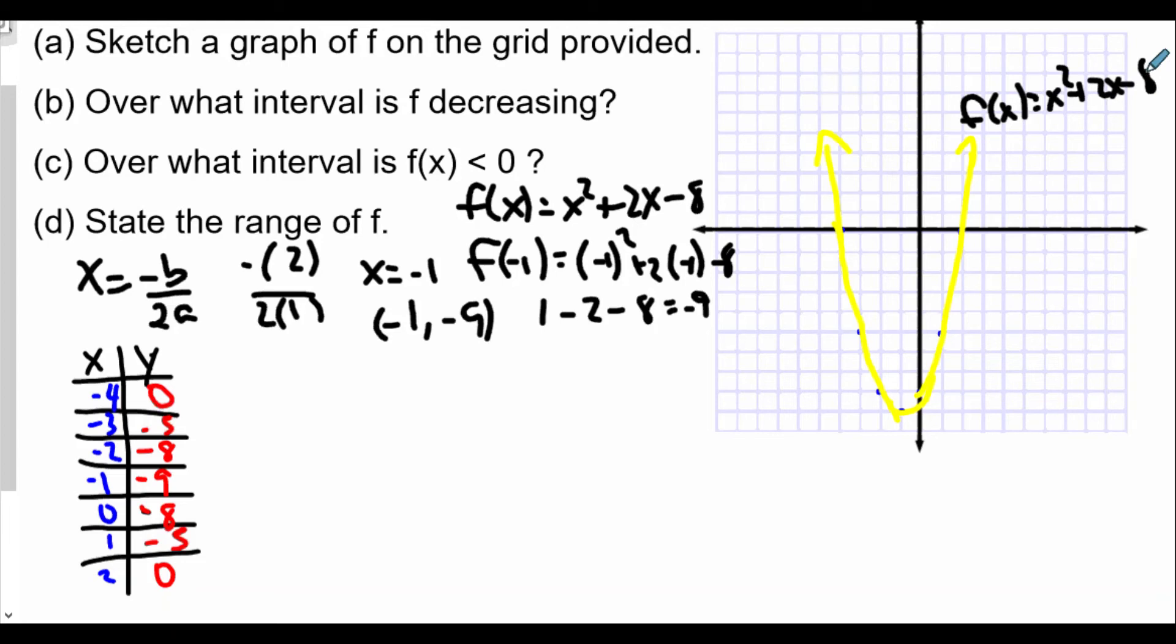And so over what interval now we're doing part B. This is part A, all for part A. Part B: over what interval is f decreasing? What we see, we talk about decreasing is when, as you move to the right, the direction of the graph is going downwards. So we see here that the graph is decreasing as we're going this way. Going down, going down, up to this point here.